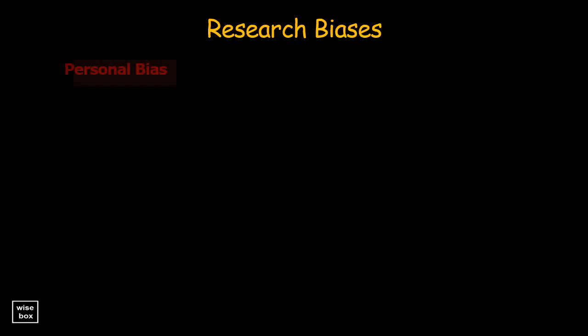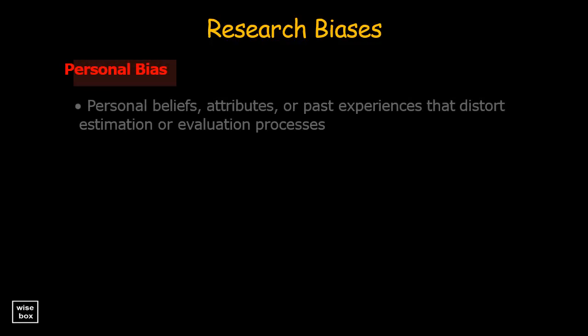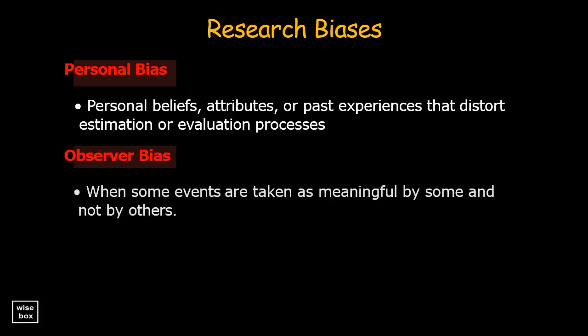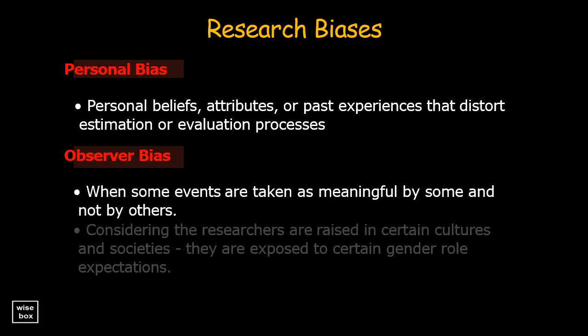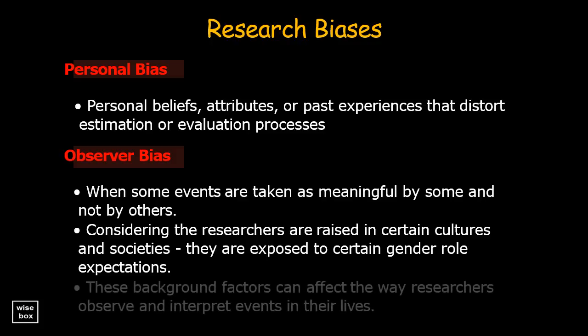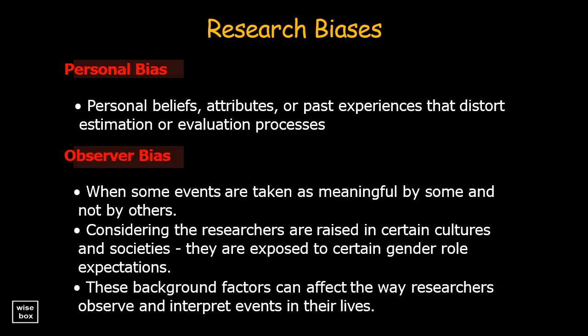Personal bias refers to personal beliefs, attributes, or past experiences that distort estimation or evaluation processes. Observer bias occurs when some events are taken as meaningful by some and not by others. Considering that researchers are raised in certain cultures and societies, they are exposed to certain gender role expectations. These background factors can affect the way researchers observe and interpret events in their lives.